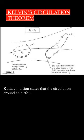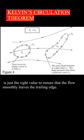Cutta Condition states that the circulation around an airfoil is just the right value to ensure that the flow smoothly leaves the trailing edge.